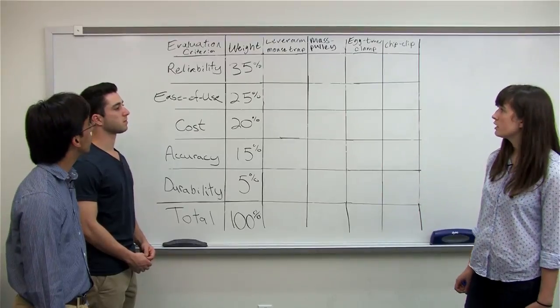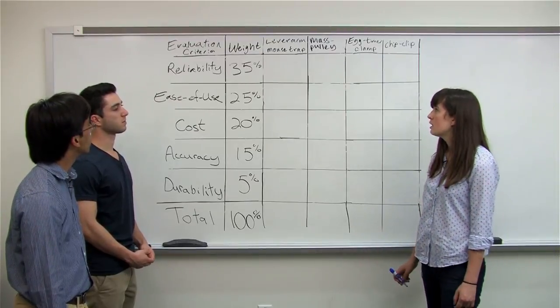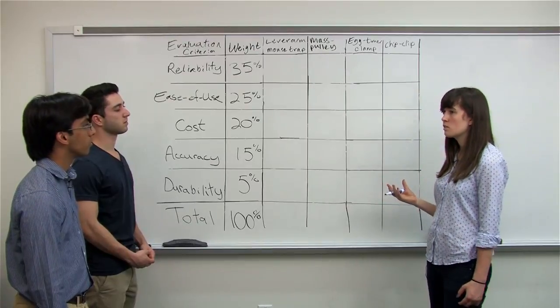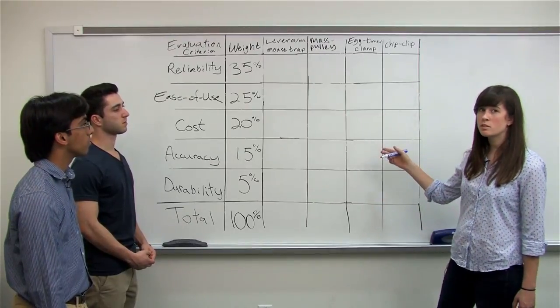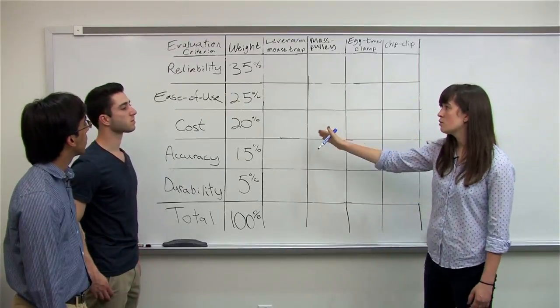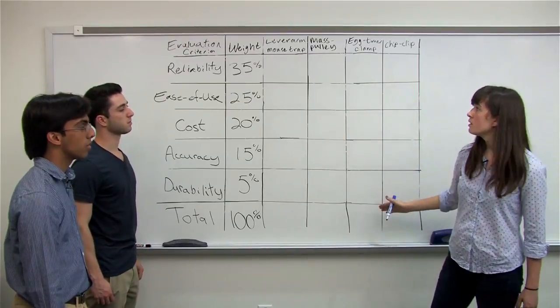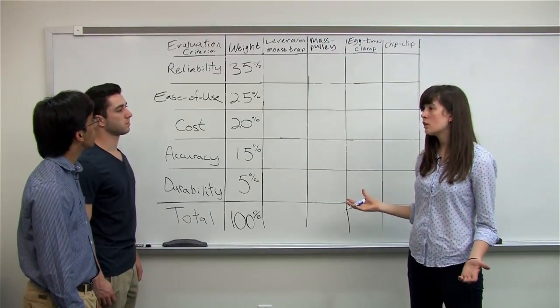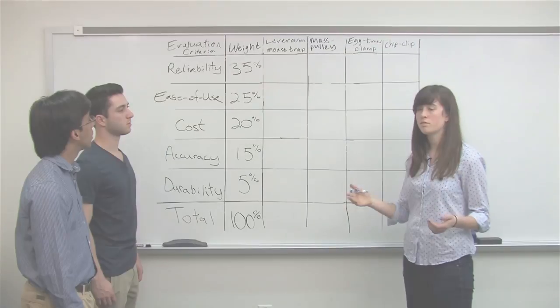So first, for each criteria, you want to assign a standard. And unlike with the screening matrix, for the scoring matrix, the standard can be a different idea for each criteria. So our standard would be given a three because we're doing a score from one to five.